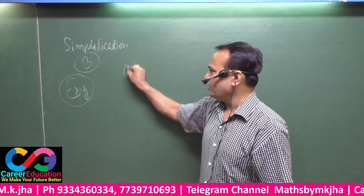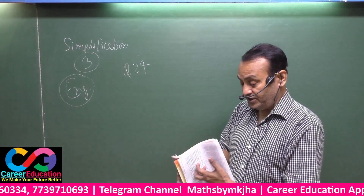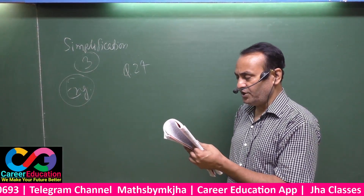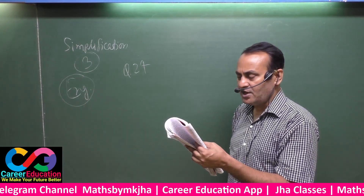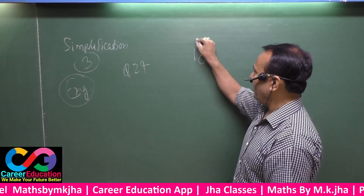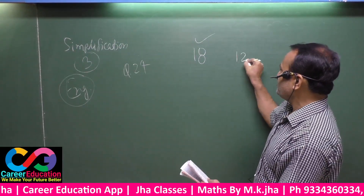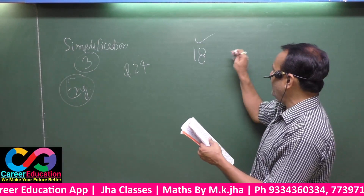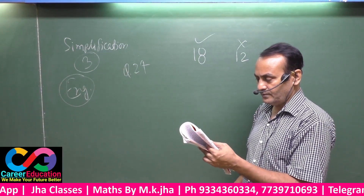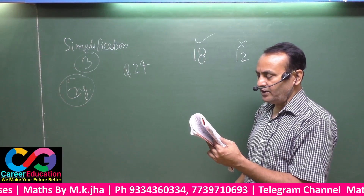Coming to question number twenty-four, which is similar. A certain amount was to be distributed equally among eighteen persons, but it was distributed among twelve persons only. Each person got one hundred twenty rupees more. Find out the amount.